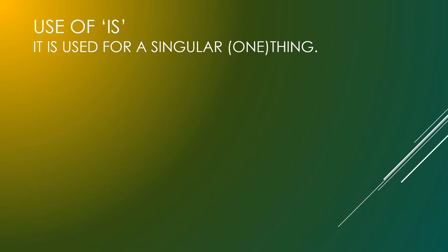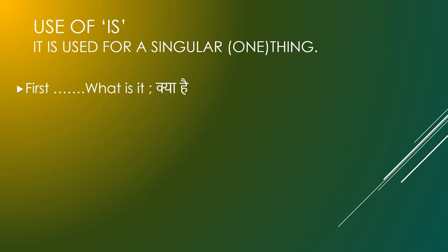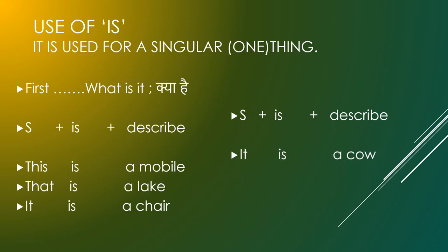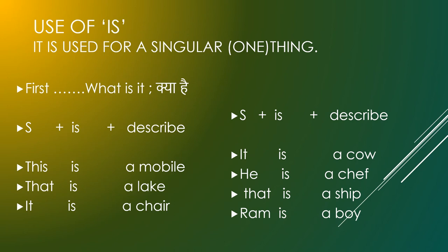Use of Is. It is used for a singular one thing — जब हम किसी एक चीज के बारे में बात करते हैं. For 'what is it': Subject + is + describe. This is a mobile. That is a lake. It is a chair. It is a cow. He is a chef. That is a ship. Ram is a boy.